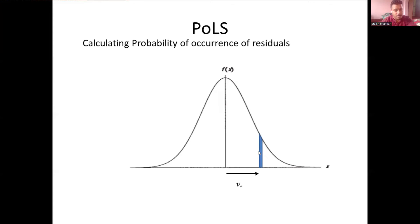Now, if we consider an error, or let's say in our case, the residual v*, and y* is the value of the function at that point, at that point v*, then the value of probability can be given by y* times del v.